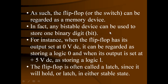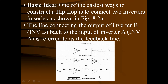Any bistable device can be used to store one binary digit or bit — either 0 or 1. When the flip-flop output is at 0V DC it is storing logic 0, and when at +5V DC it is storing logic 1. The flip-flop is often called a latch since it will hold or latch into either of the stable states. The basic idea is that this flip-flop can be constructed using two inverters.